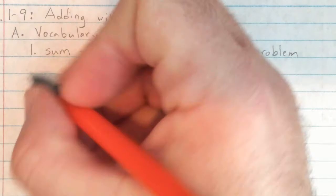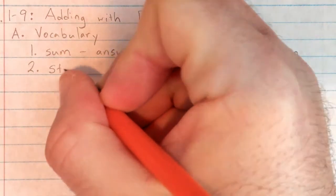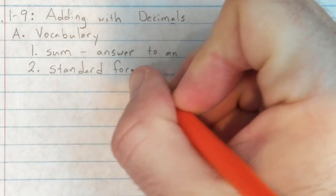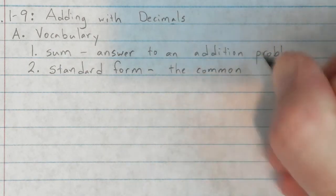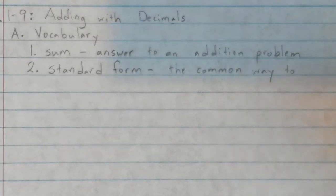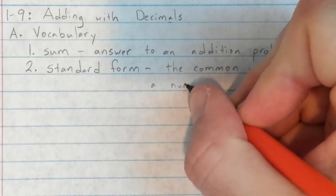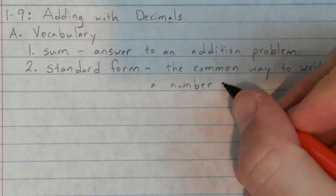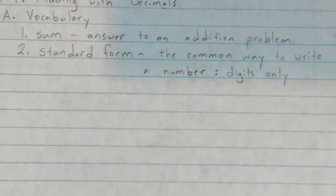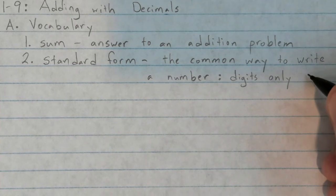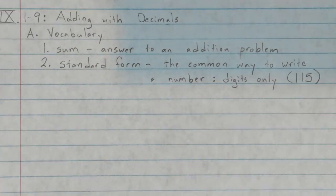Most of the problems we're going to work on, you're going to be writing numbers in standard form. Standard form is the common way — what you would probably consider the normal way — to write a number. Basically digits only. We're not writing in expanded form, and we're not using word form. We just write the digits, like 115, whether it's a whole number or a decimal.